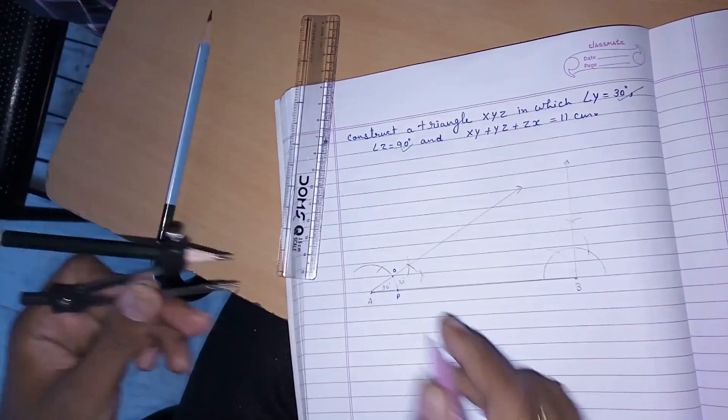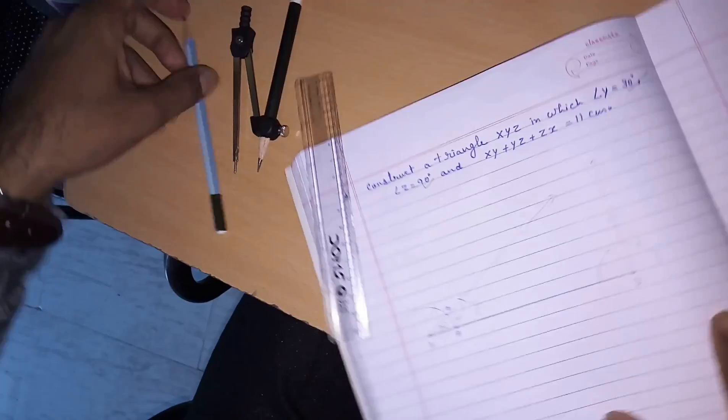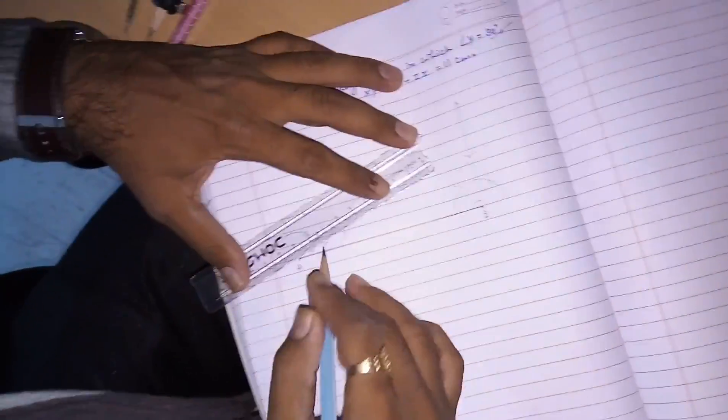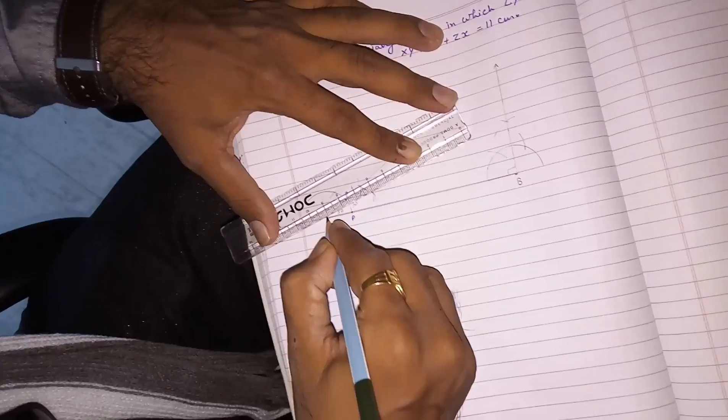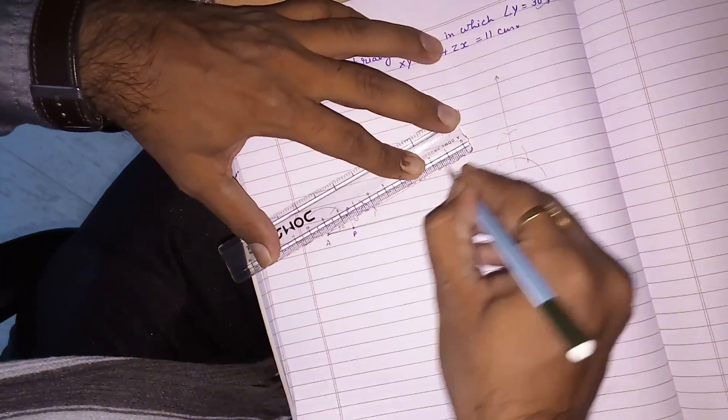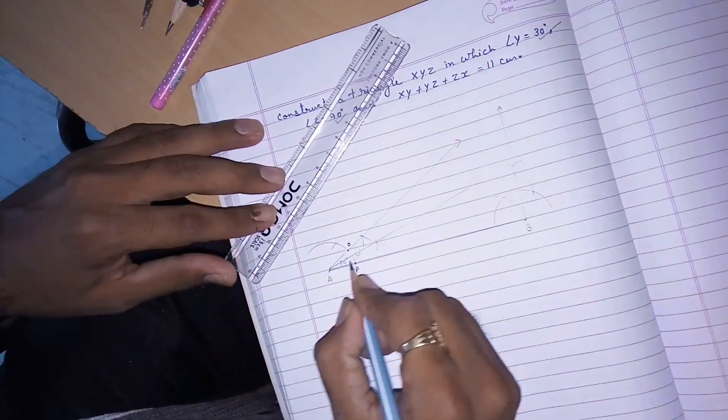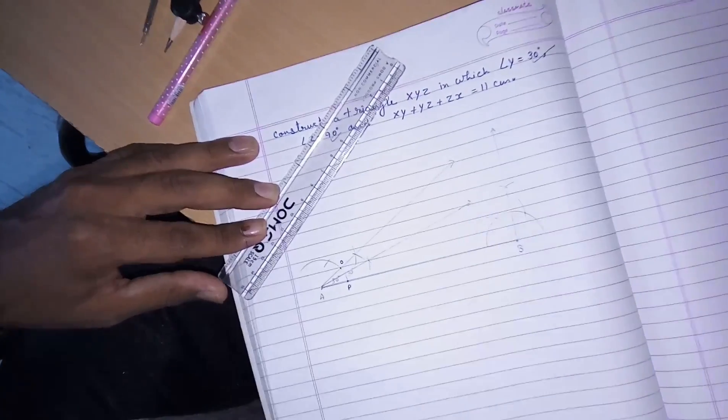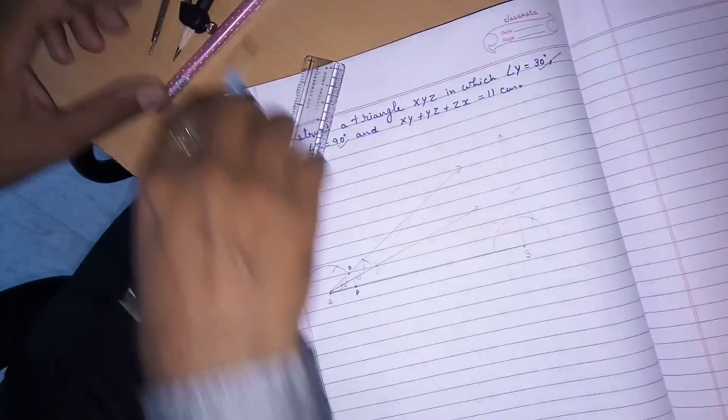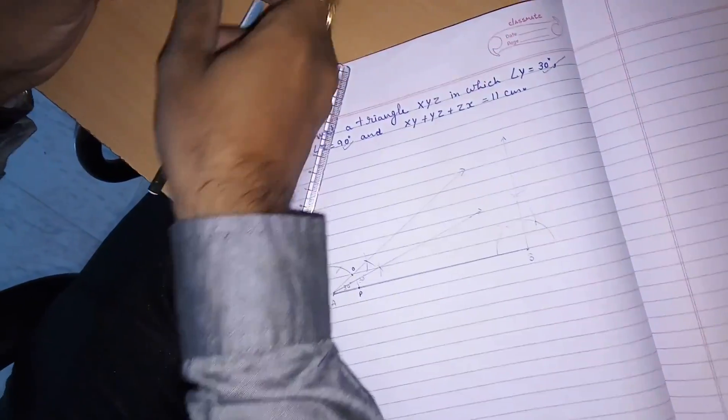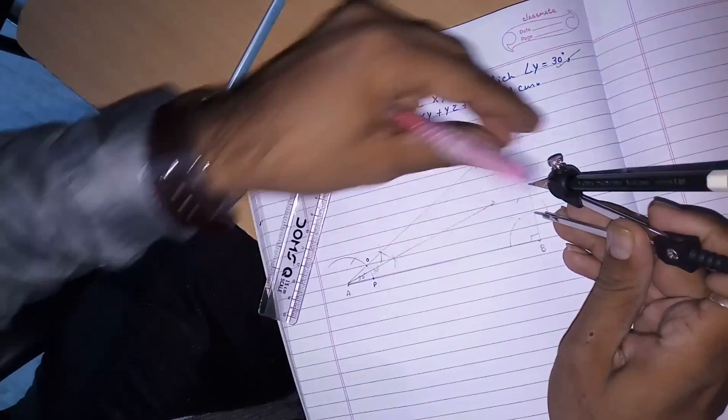From O draw arc and from P also draw another. Where these two are intersecting, from there our next line will go. So, actually this is 16 degrees we know but we don't have to write that. And then bisector of this, from these two points.